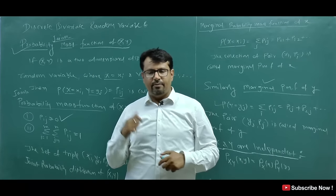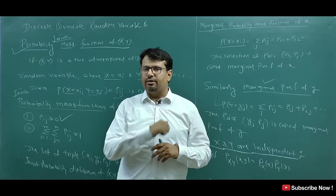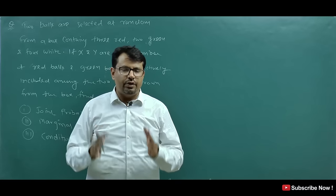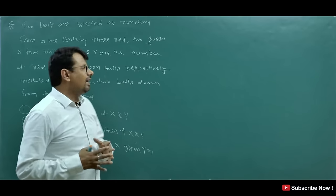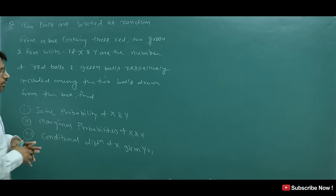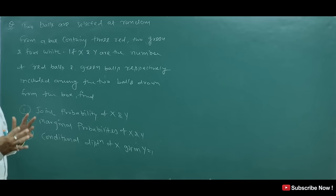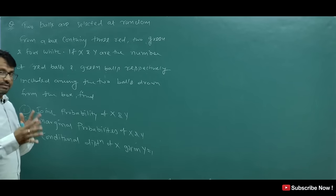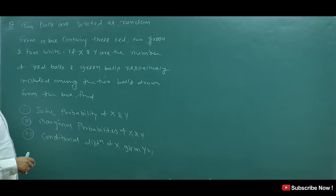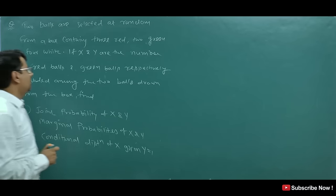Now I will explain one example to make the concept clear. Two balls are selected at random from a box containing three red, two green, and four white balls.